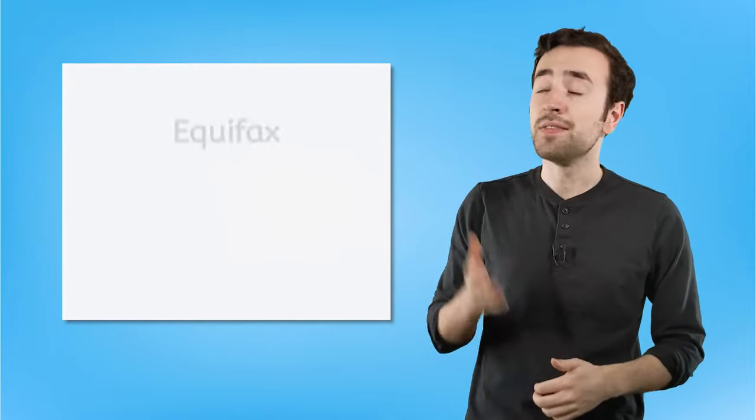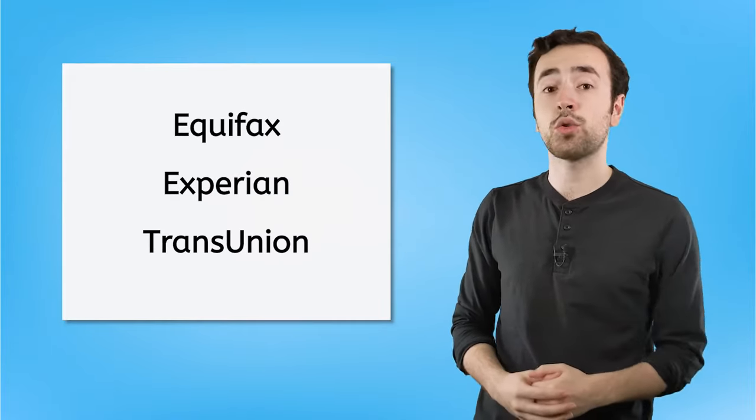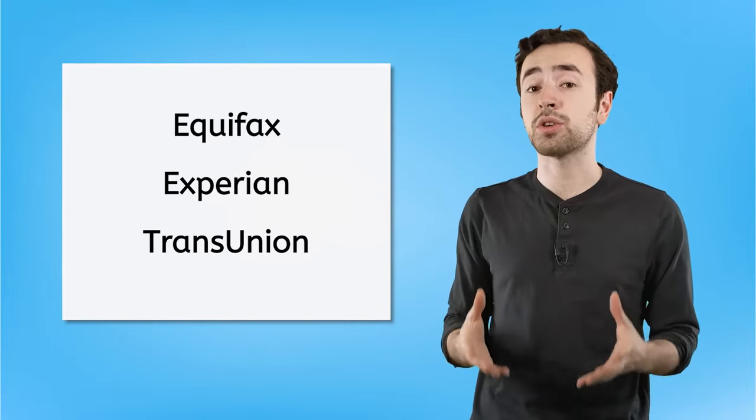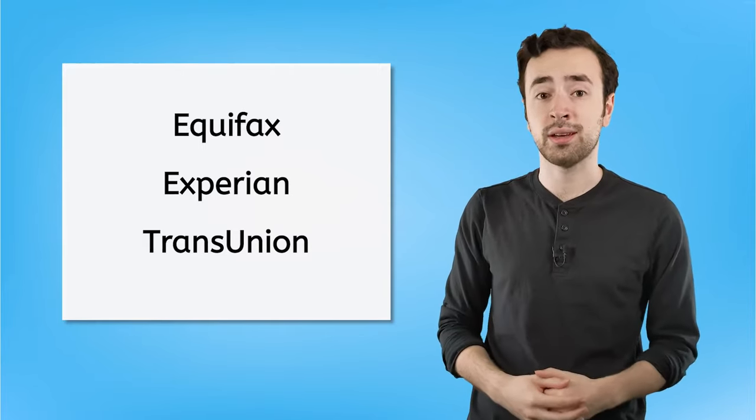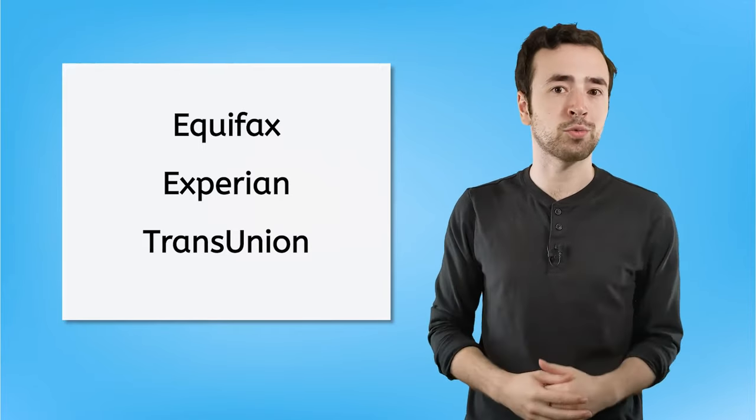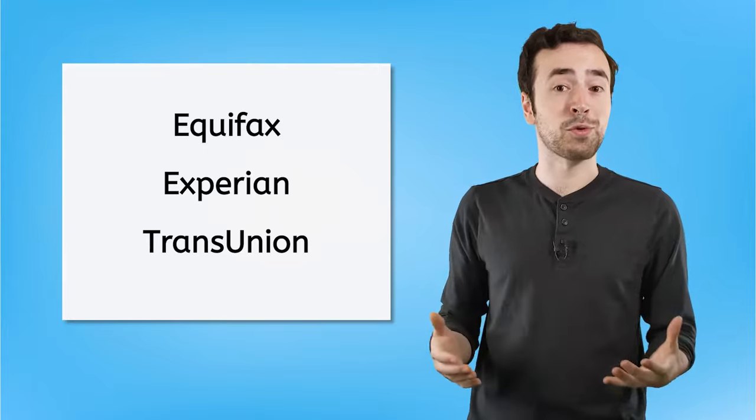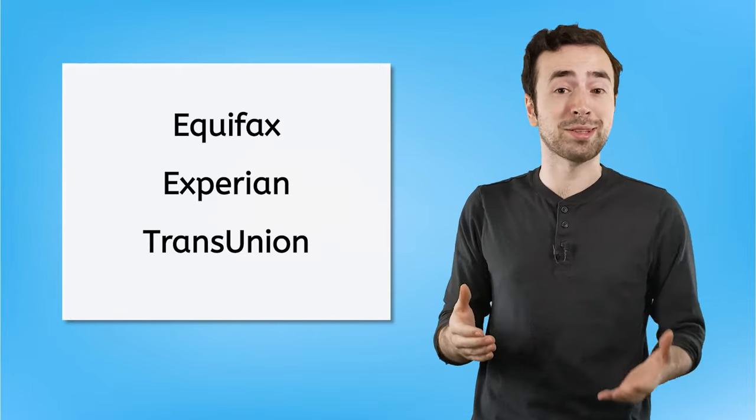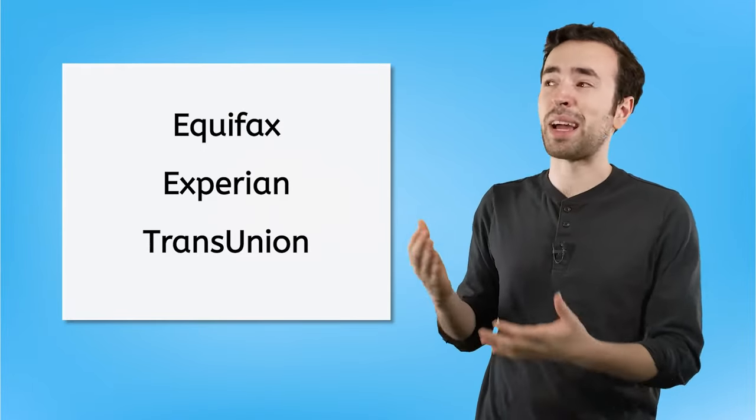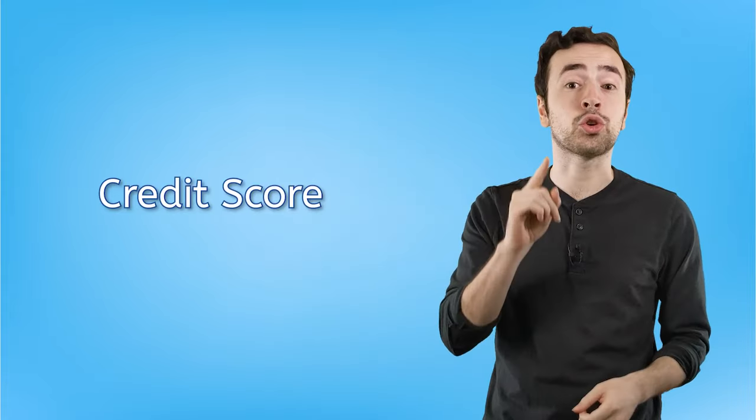In the United States, these are the three main credit bureaus that can collect your information and financial data to create your credit report. Now, these credit reports might all be a little different because they're all coming from different companies, and they might choose to report on things a little bit differently. But all in all, when it comes to determining how likely you are to pay off your debt, the most important thing someone will look for is your credit score.